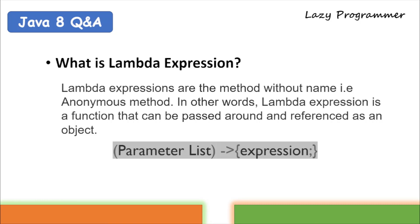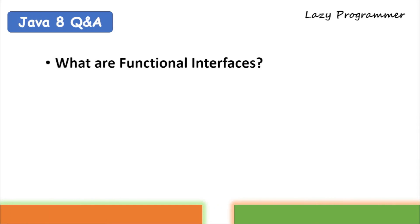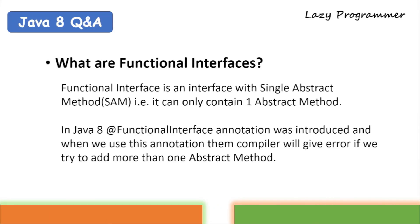Another important topic is functional interfaces. What are functional interfaces? They are typical interfaces but with one exception: they can have only a single abstract method. If you try to add another abstract method inside a functional interface annotated with @FunctionalInterface, the compiler will give a compilation error. Using the @FunctionalInterface annotation is not mandatory, but if you use it, you ensure that no one can add any other abstract method to that functional interface.